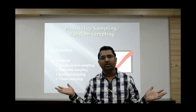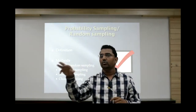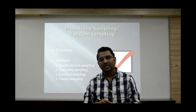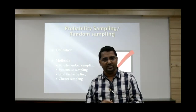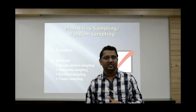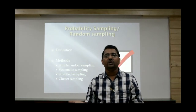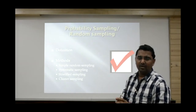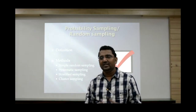Simple random sampling is similar to the lottery method. Suppose there are 100 persons and you want to select 10 out of them. You make 100 chits, write the names of all persons on them, shuffle all the chits, and then draw 10 chits one by one. Whoever's name is on the selected chits gets chosen — this is the lottery method, which is simple random sampling.